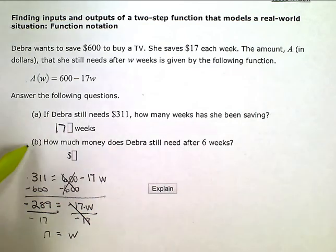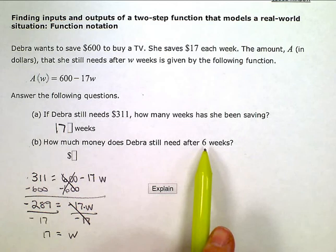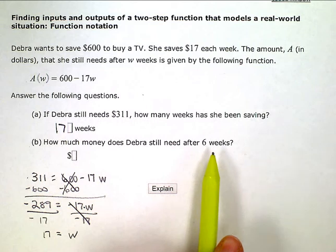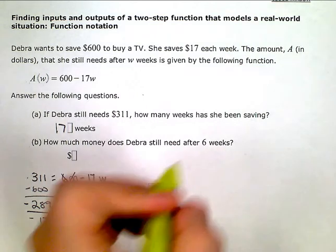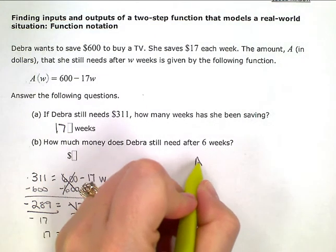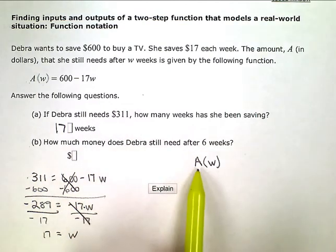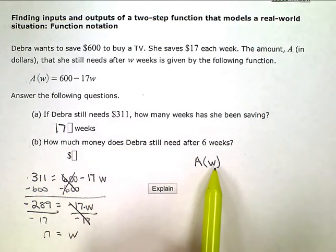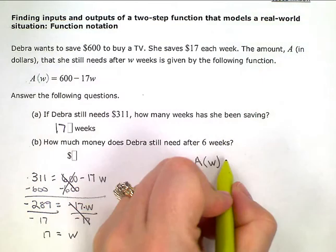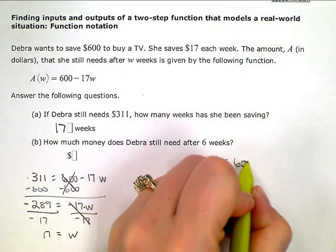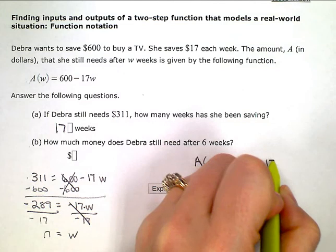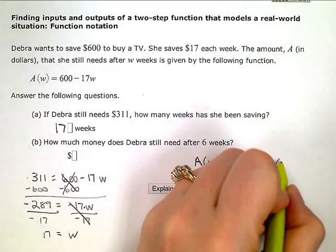Part B says, how much money does Deborah still need after six weeks? This time they're giving us the w or the input. So the amount she's still going to need, the amount she still needs with respect to the weeks she's been saving is equal to $600 minus $17 a week for six weeks.